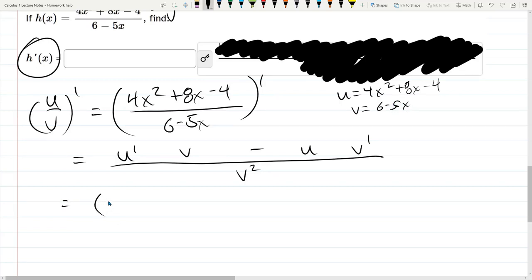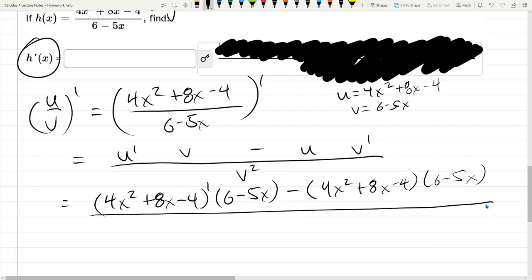Alright so u prime, 4x squared plus 8x minus 4 prime, times just 6 minus 5x, minus u, 4x squared plus 8x minus 4. v prime, 6 minus 5x minus 6 minus 5x. All this divided by v squared, 6 minus 5x squared.